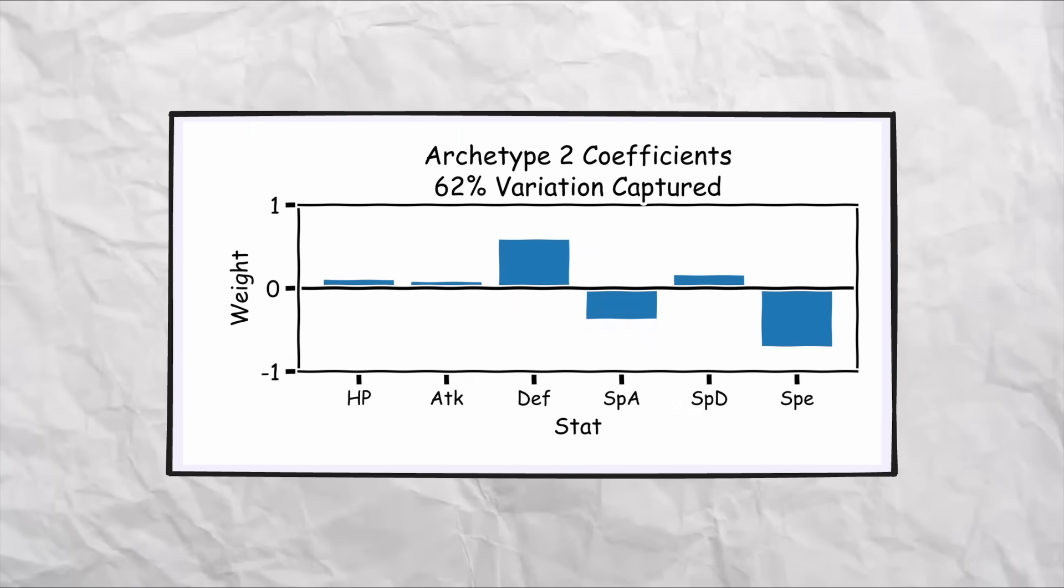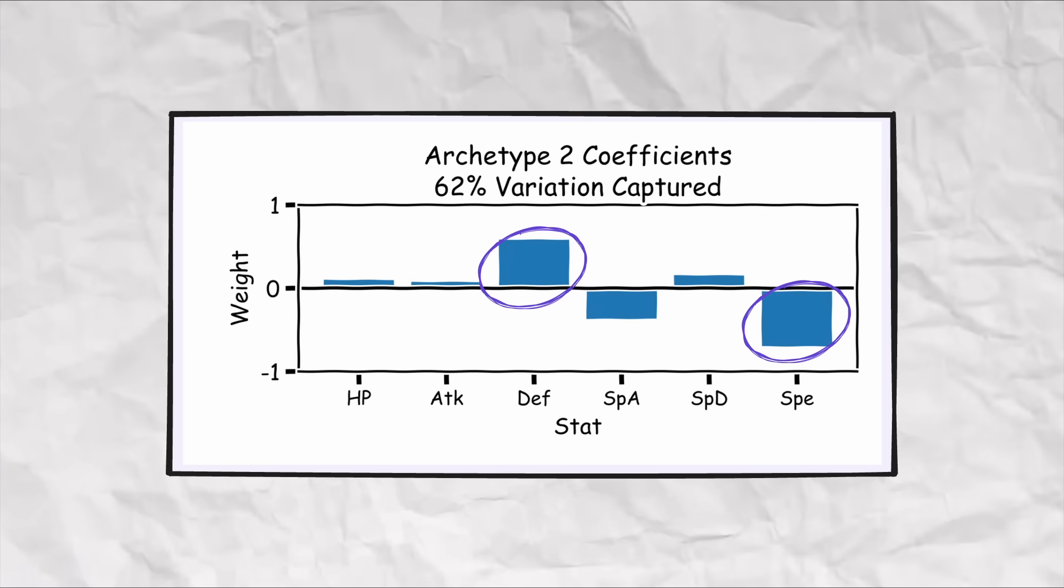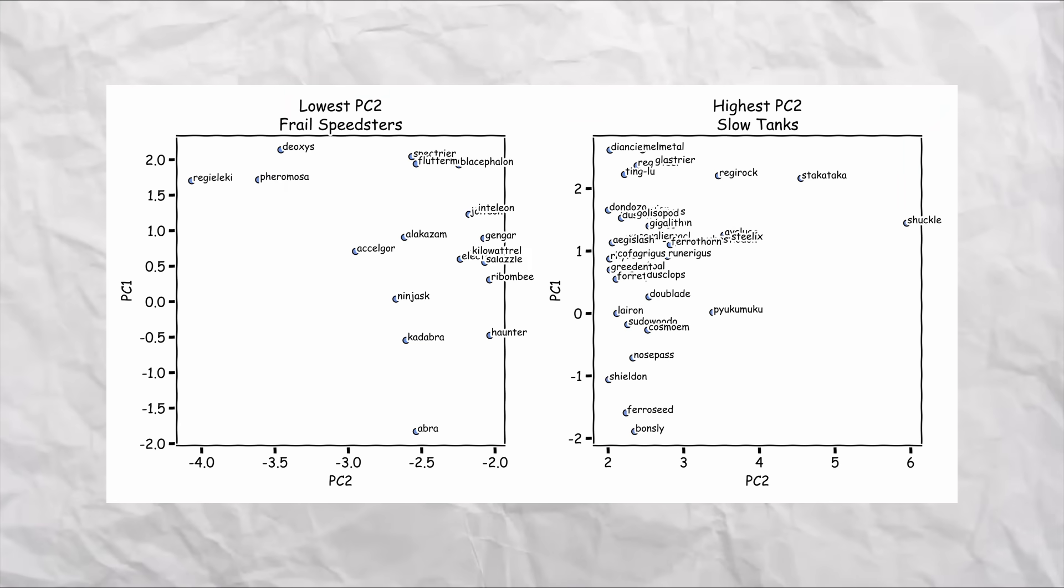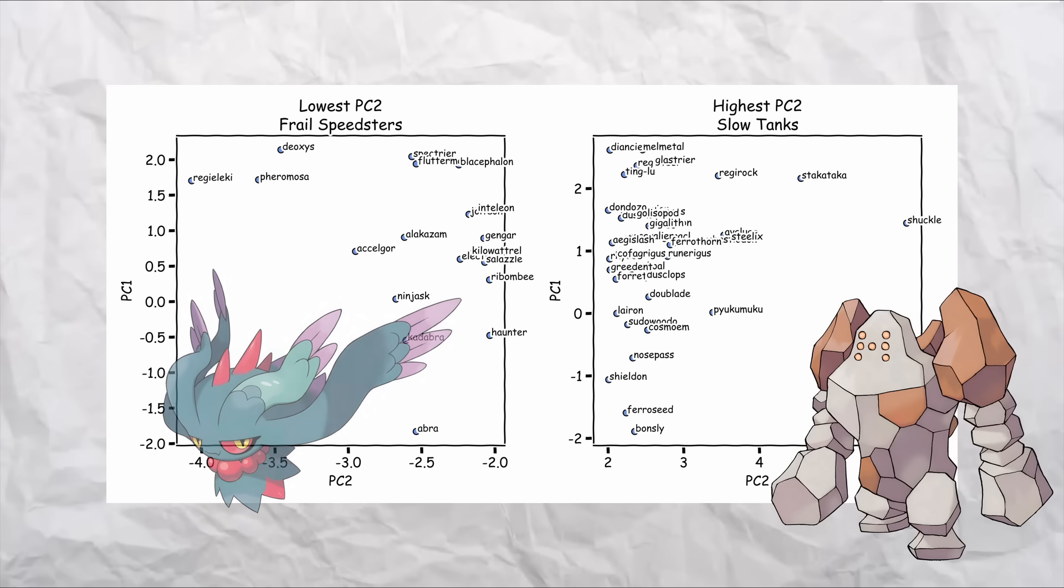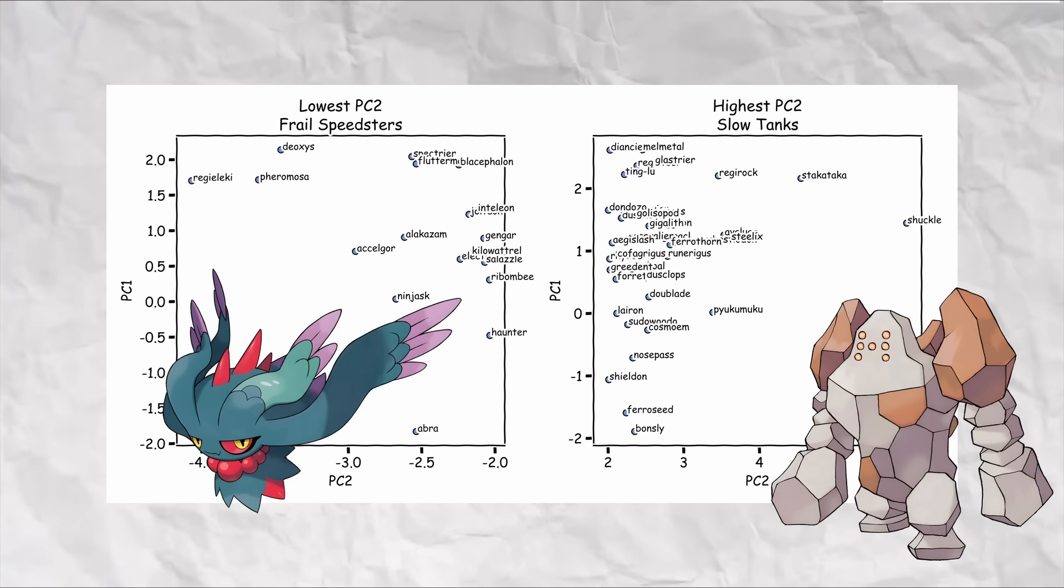To see that even more, let's look at the second principle component, which gets us up to explaining almost two thirds of all of the stats variation in the game. This archetype is focused on separating the high defense low speed mons from the low defense high speed mons, which we colloquially usually call the slow tanks. Think things like Stakataka, Regirock, Avalug, versus the frail speed stars, things like Regielecki, Fluttermain. Note here that frail is just talking about the defense stat and not the special defense stat.